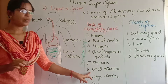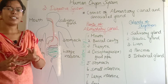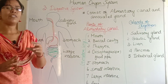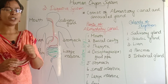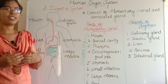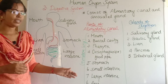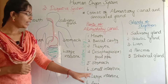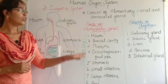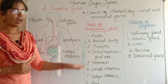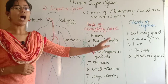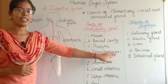Next is the small intestine. The duty of the small intestine is to absorb the digested food — so absorption of digested food takes place in the small intestine. Then comes the large intestine, and finally the anus.